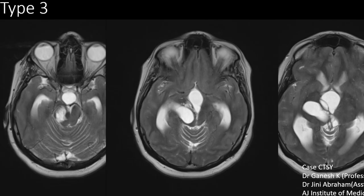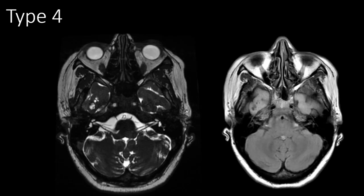Type 3 perivascular spaces are located in and around the brainstem. There is a cystic lesion with septations involving the brainstem, extending into the right thalamus and causing compression of the aqueduct and posterior third ventricle, resulting in hydrocephalus. These are probably the only perivascular spaces which will require neurosurgical intervention to relieve the hydrocephalus.